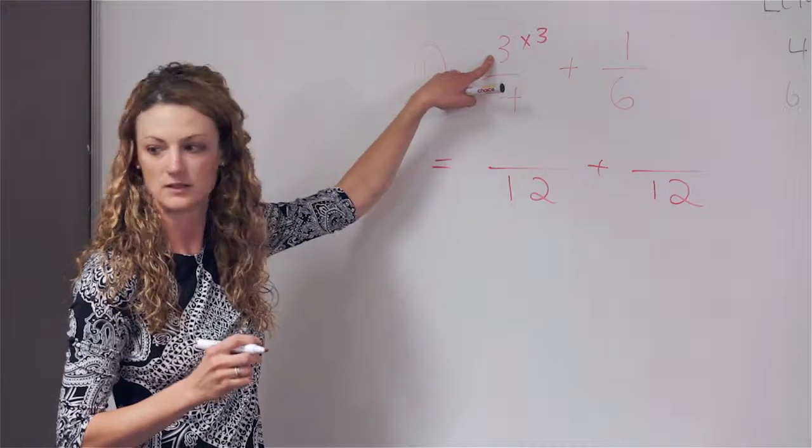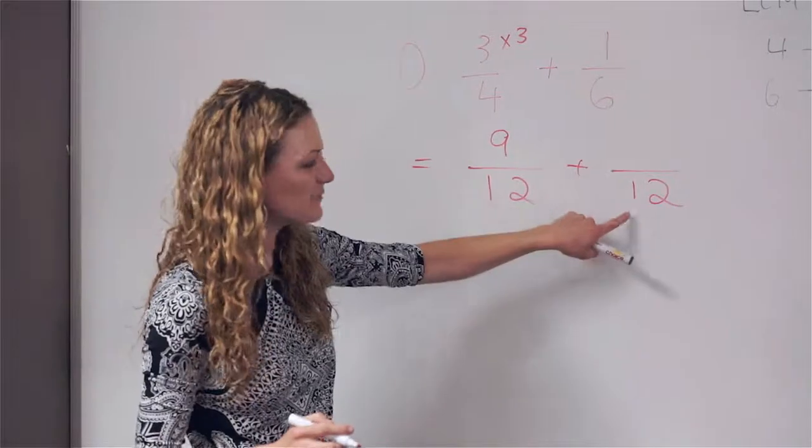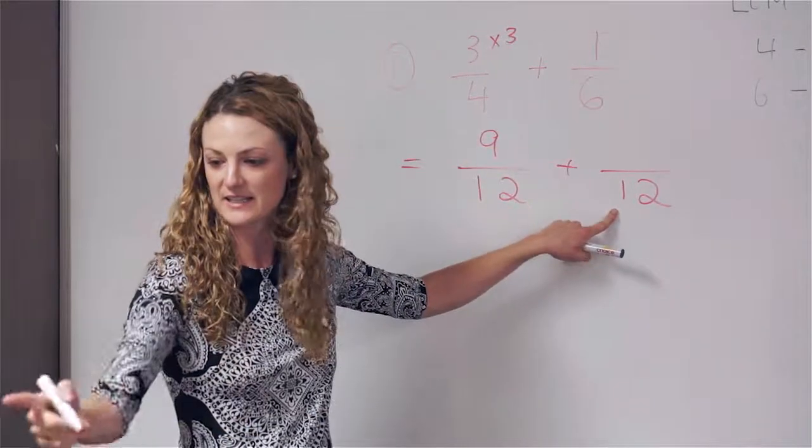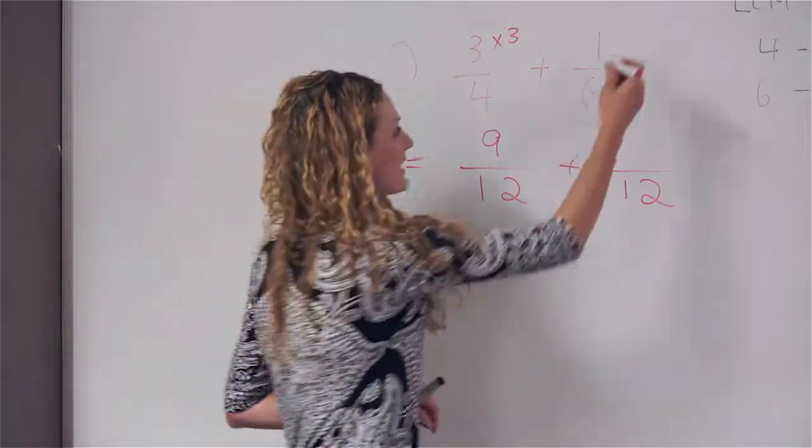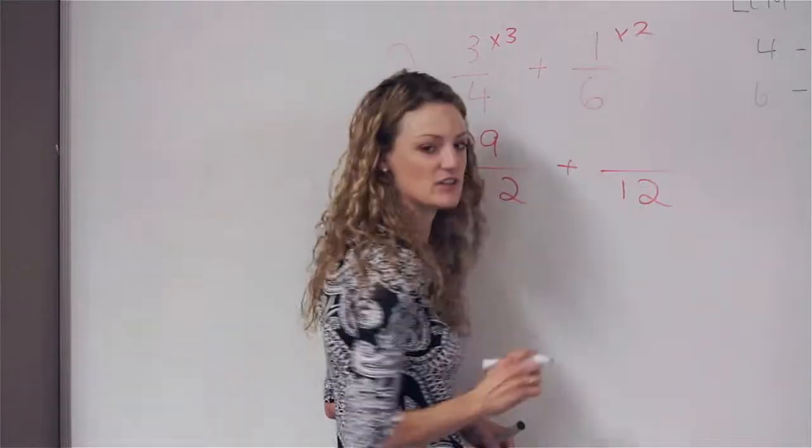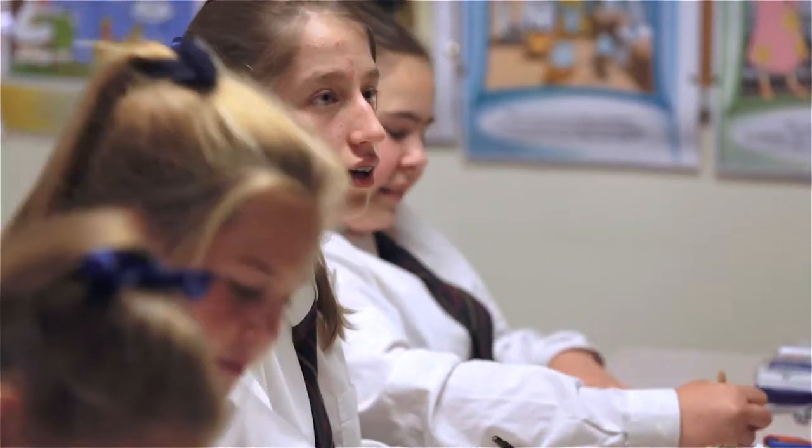So here, if I'm times-ing three by three, what do I get? Nine. If I'm times-ing here, what am I doing to get to twelve? Times by two, good. So I need to do the same to the top, so I need to times by two. What do I get? Two. I'm glad you didn't get that wrong.